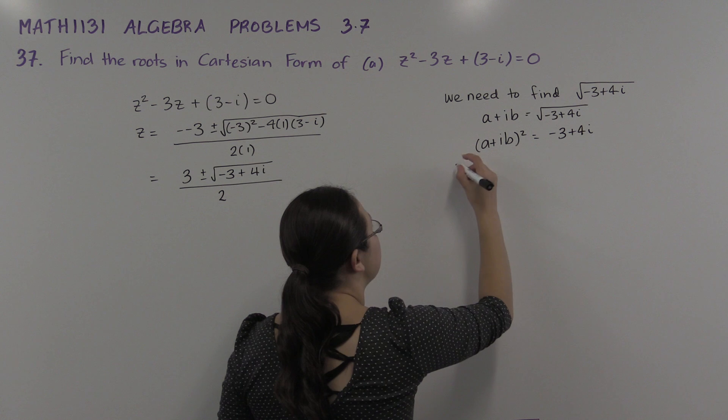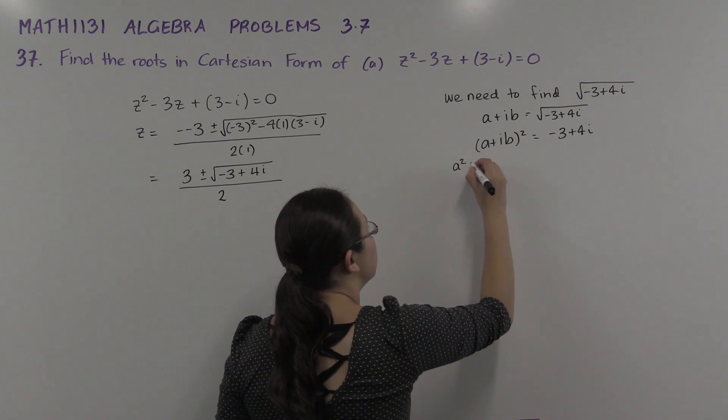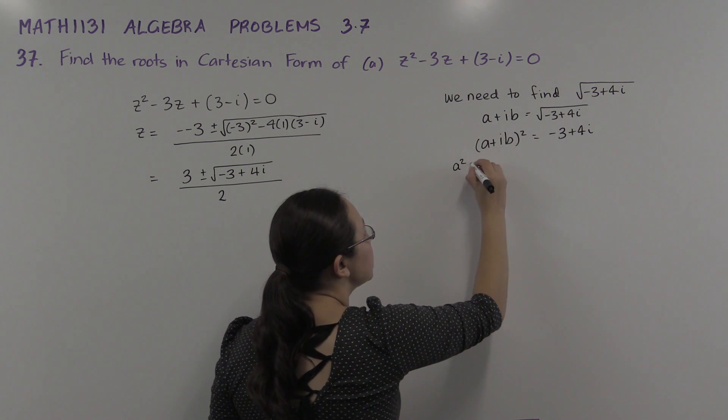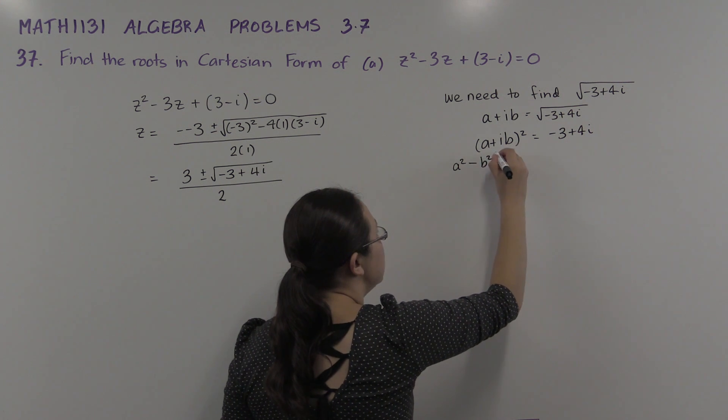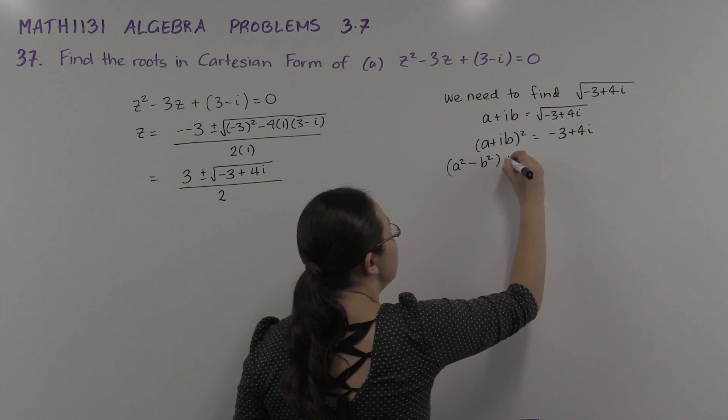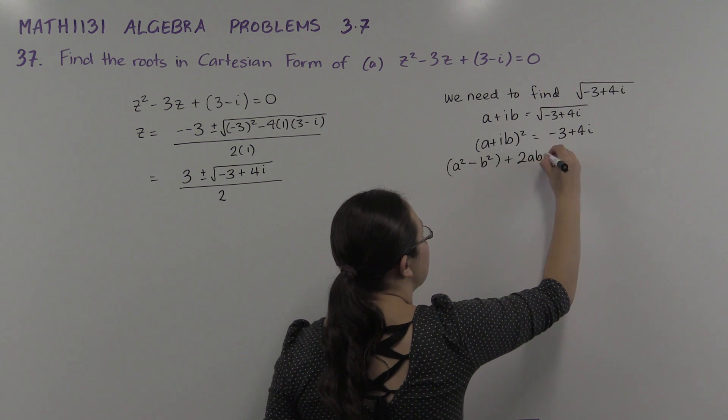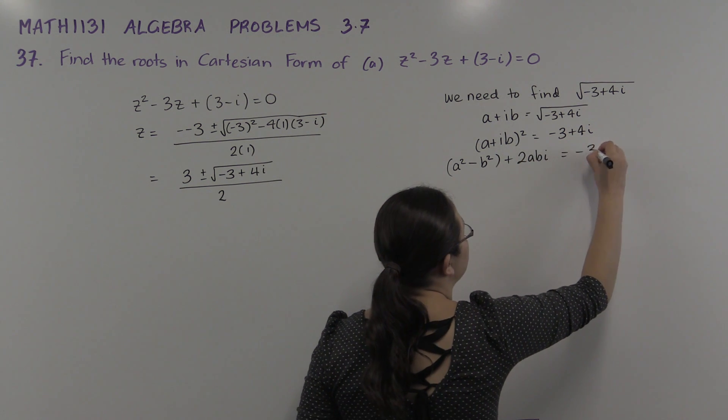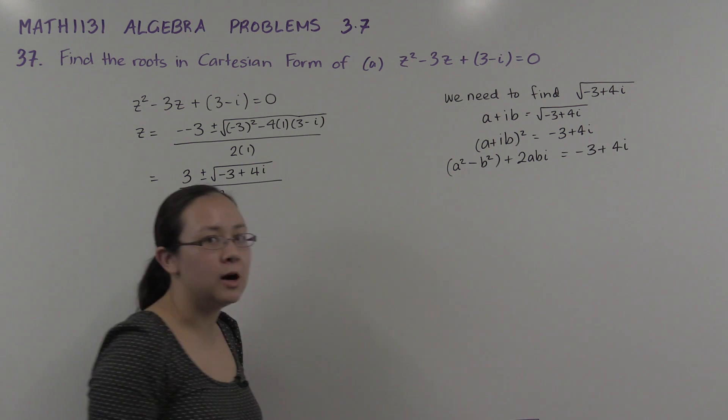Expanding this out, we'll get a² + i²b². Overall is -b², that's my real part, plus 2abi, that's my imaginary part. That's equal to -3 + 4i.